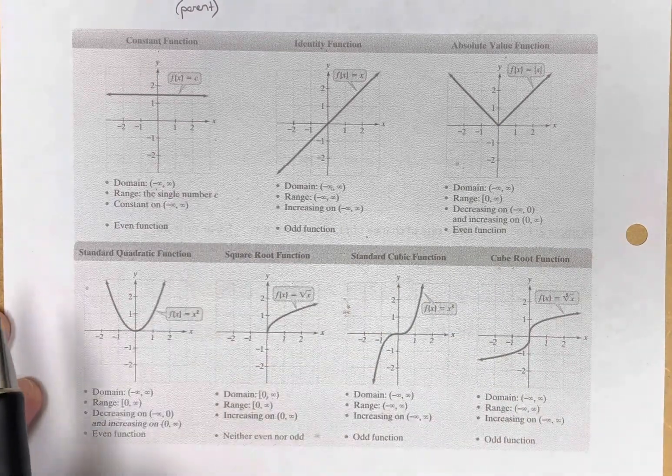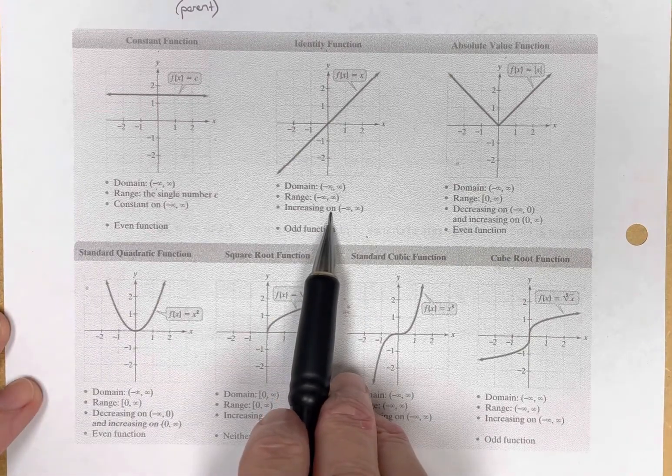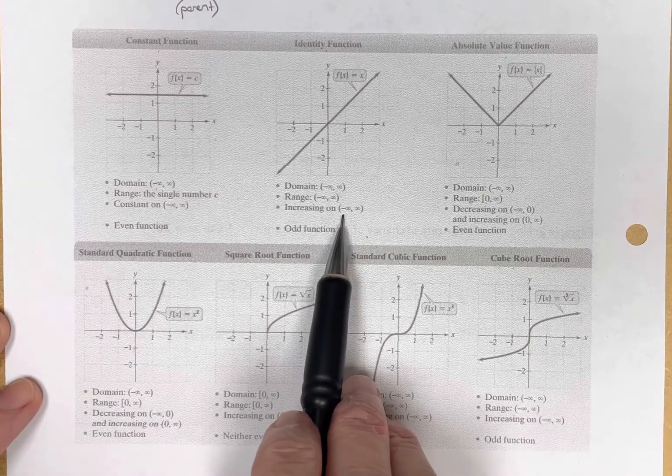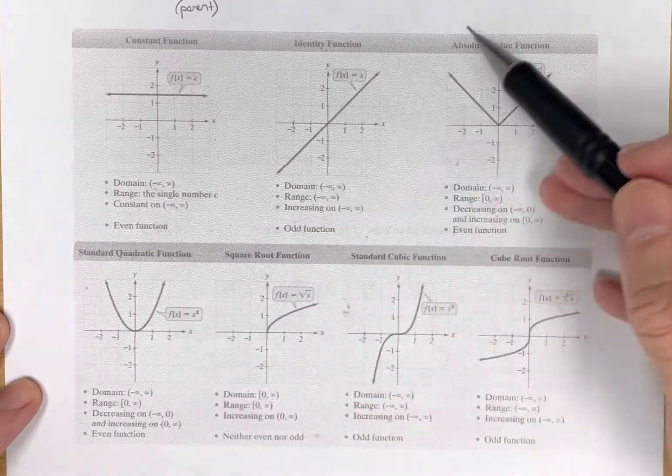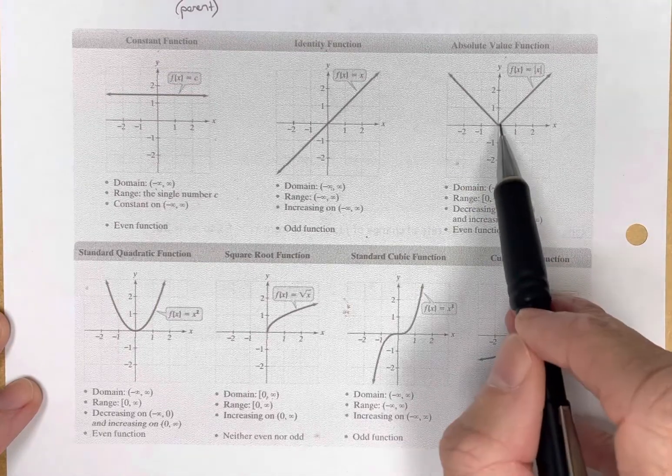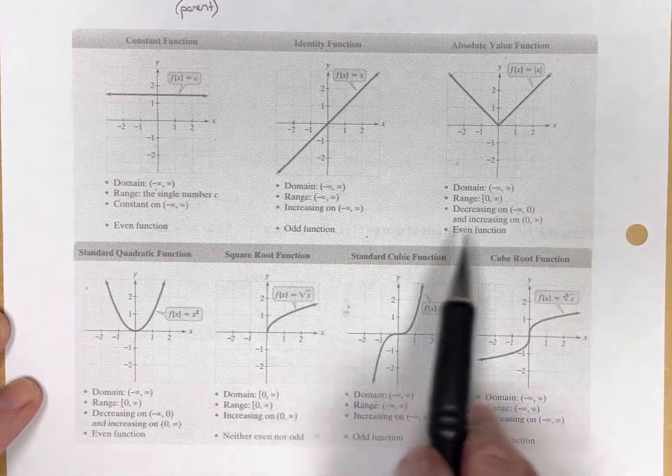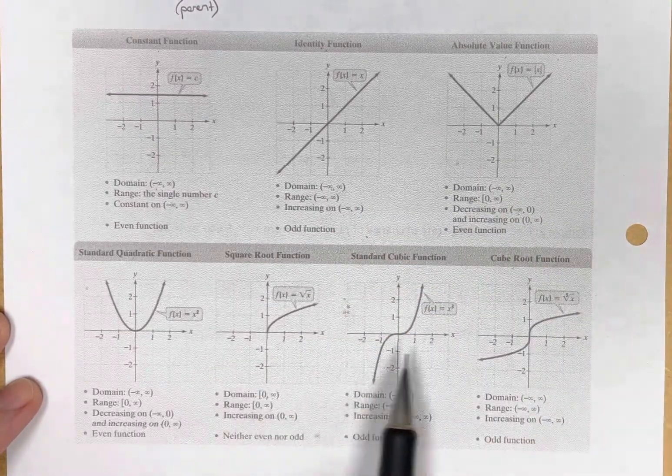When it decreases or increases, and we've talked about that, this one increases all the way from negative infinity to infinity. The parent function is increasing the entire time. This one increases from zero to infinity, and it decreases from negative infinity to zero.